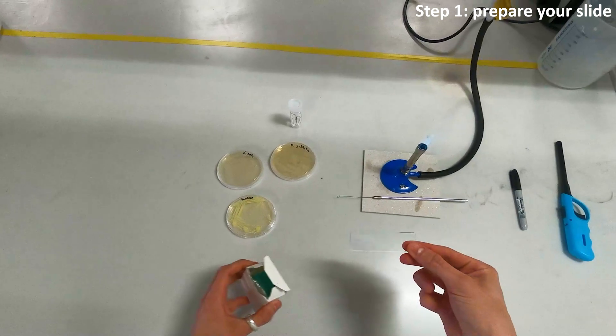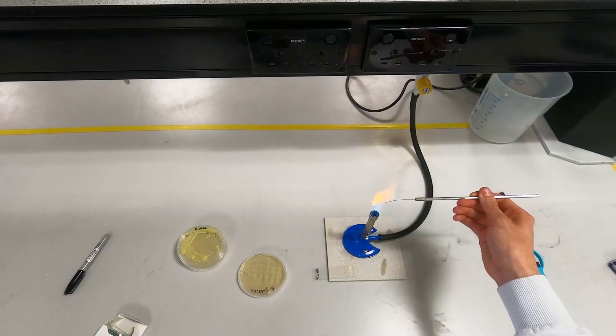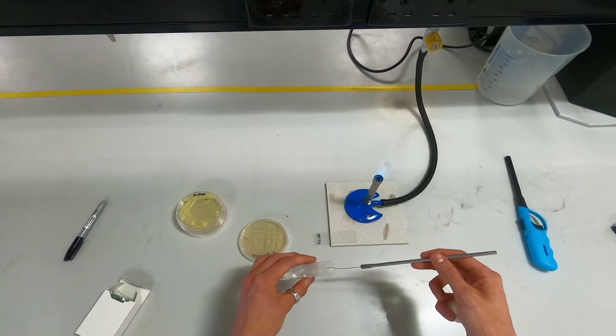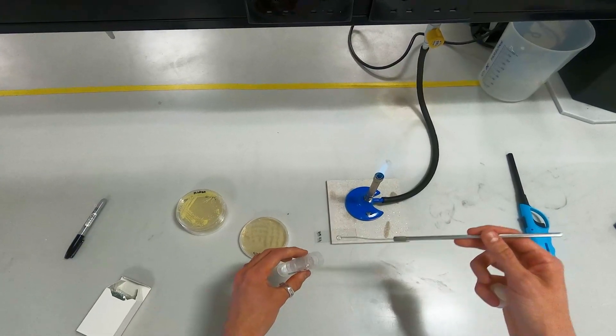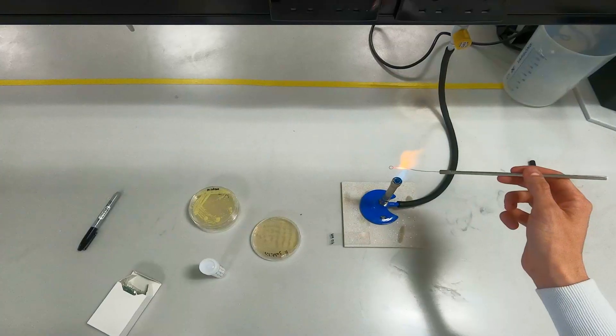Now it's time to prepare your slide, so label it something appropriate before putting it down to flame your inoculation loop. Pick some water up with your sterile inoculation loop - you should be able to pick some up within the loop itself and it should look just like that. Place the water droplet onto the slide and flame your loop again before you put it down.